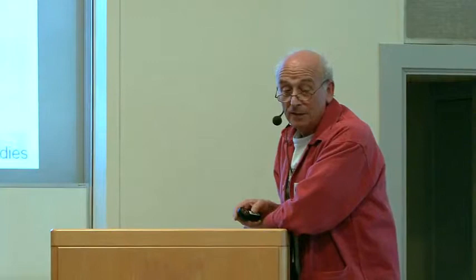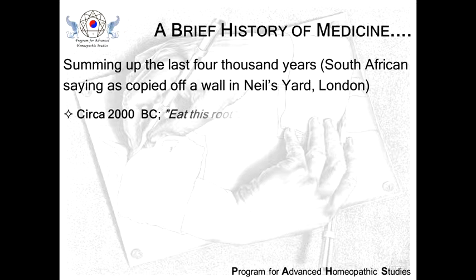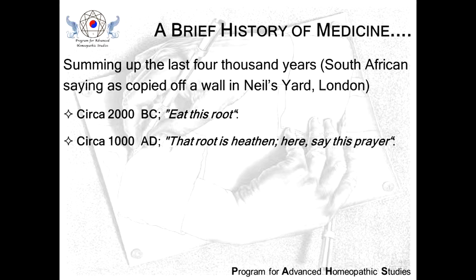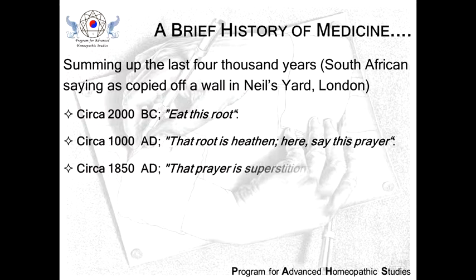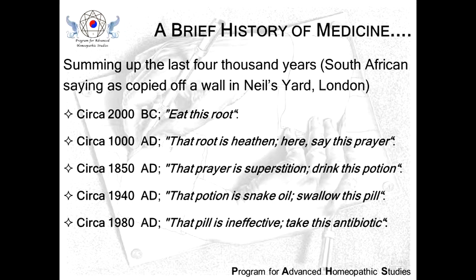Let's just start with a brief history of medicine — very brief and very biased. This was taken off the wall of a shop called Neal's Yard in London, which sells homeopathy and products to make your skin look good. Circa 2000 BC: eat this root. 1000 AD: that root is heathen, say this prayer. 1850 AD: that prayer is superstition, drink this potion. 1940 AD: that potion is snake oil, swallow this pill. 1980: that pill is ineffective, take this antibiotic. 2000: that antibiotic is artificial, eat this root.